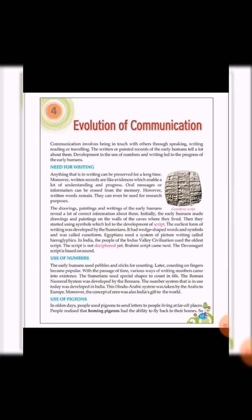Then came the use of numbers. The early humans used pebbles and sticks for counting. Later, counting on fingers became popular. With the passage of time, various ways of writing numbers came into existence. The Sumerians used special shapes to count in sixties. The Roman numeral system was developed by the Romans. The number system that is in use today was developed in India. This Hindu-Arabic system was taken by the Arabs to Europe. Moreover, the concept of zero was also India's gift to the world.